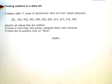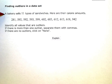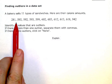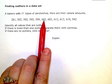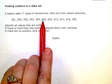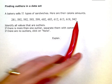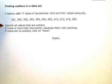Finding outliers in a data set. A bakery sells 11 types of sandwiches. Here are their calorie amounts. So our data goes from 281, and then we have a bunch in the 500 range, a bunch in the 600 range, and then a 942. Identify all values that are outliers.